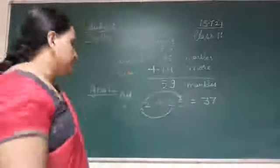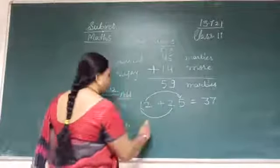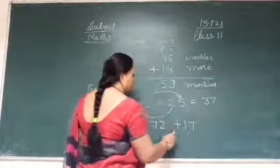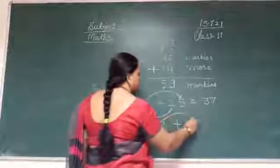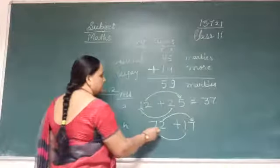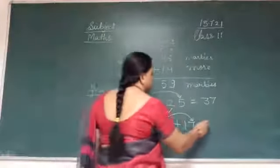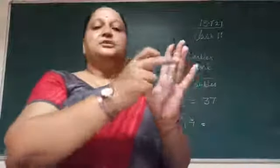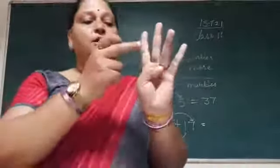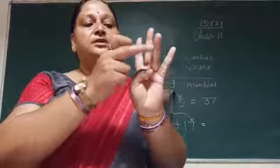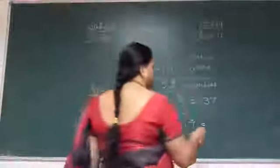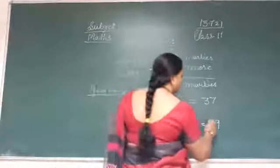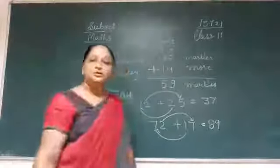We will do one more. 72 plus 7. First, we will add 1s. Then, 10s. 2 plus 7. 1, 2, 3, 4, 5, 6, 7. Then, 1, 2, 3, 4, 5, 6, 7, 8, 9. 7 on 1s. So, 79.